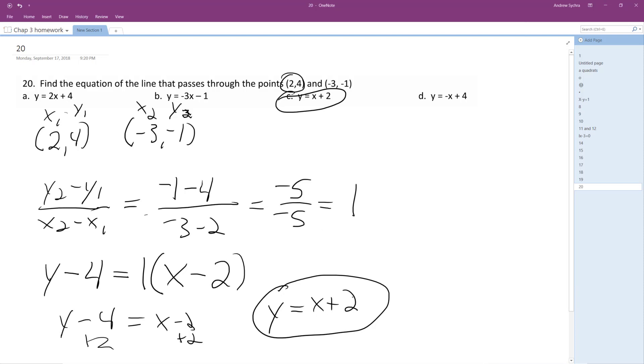So if we plug in 2 for x, we get 4 out. Yep, if we plug in negative 3 for x, we get negative 1 out. Yep, alright, yeah, so it's c.